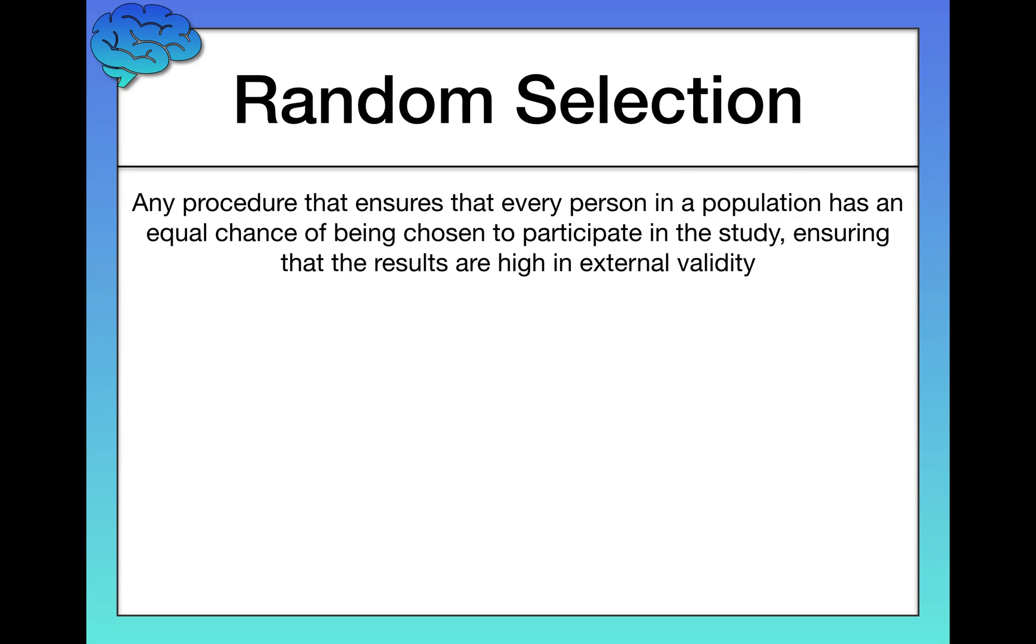Random selection is simply any procedure that ensures that every person in a population has an equal chance of being chosen to participate in the study. And this is really critical because we want our results to be generalizable, that is, to be high in external validity, what we talked about before as well.